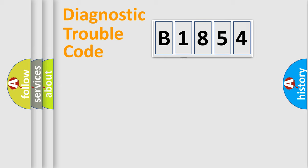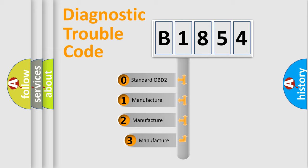Powertrain, Body, Chassis, Network. This distribution is defined in the first character code.